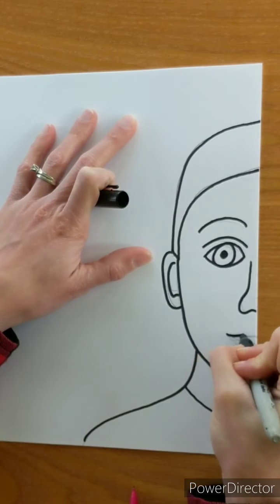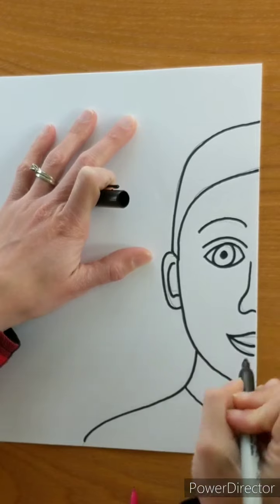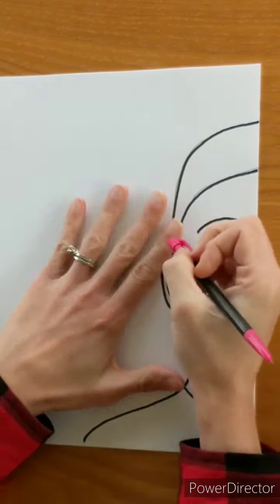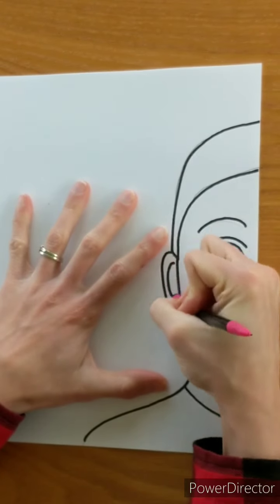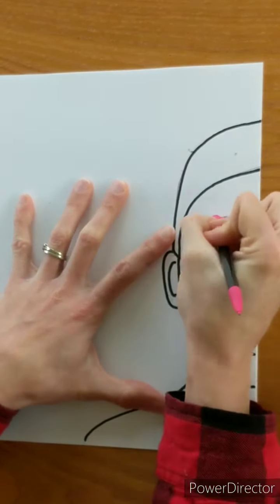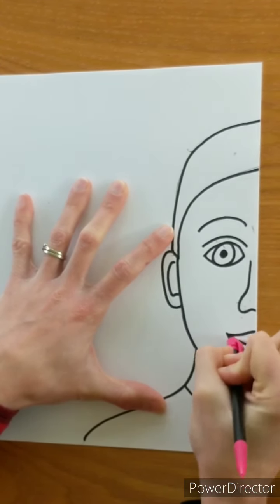This completes the drawing portion of your self-portrait. Next week I will show you some options for the background and also ways that you can add some color. When you're done you can finalize your drawing by erasing any of the pencil marks that you have. I hope you have a great time drawing your self-portrait and I can't wait to see them.